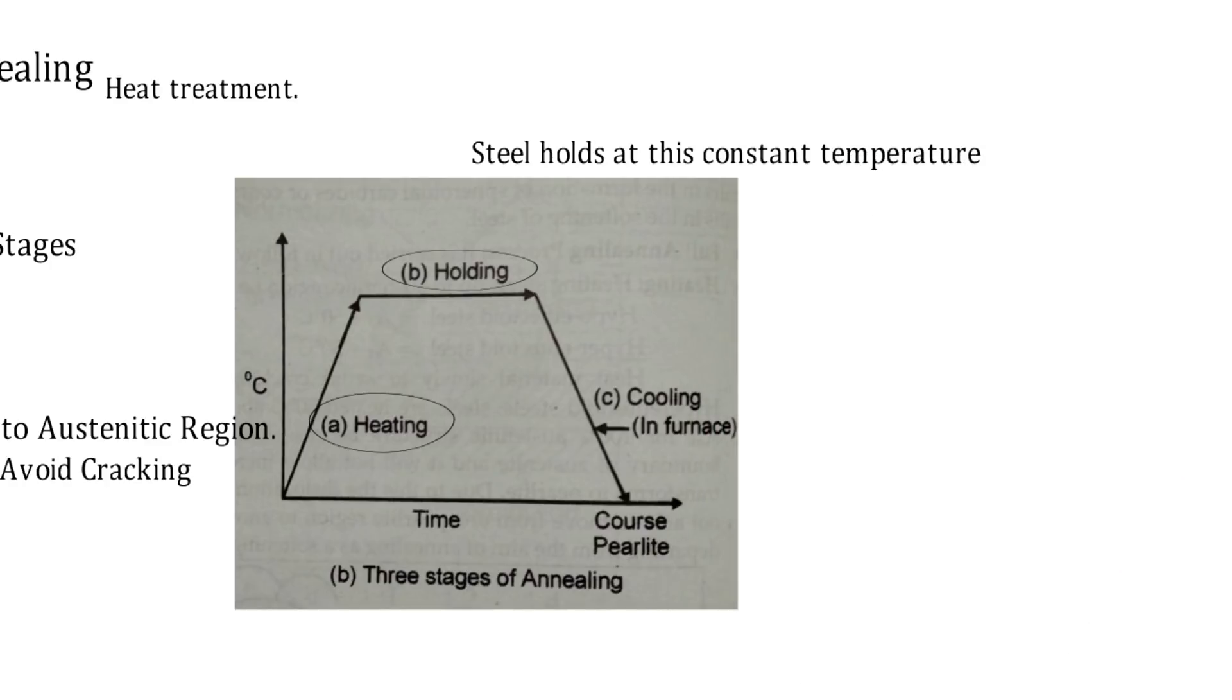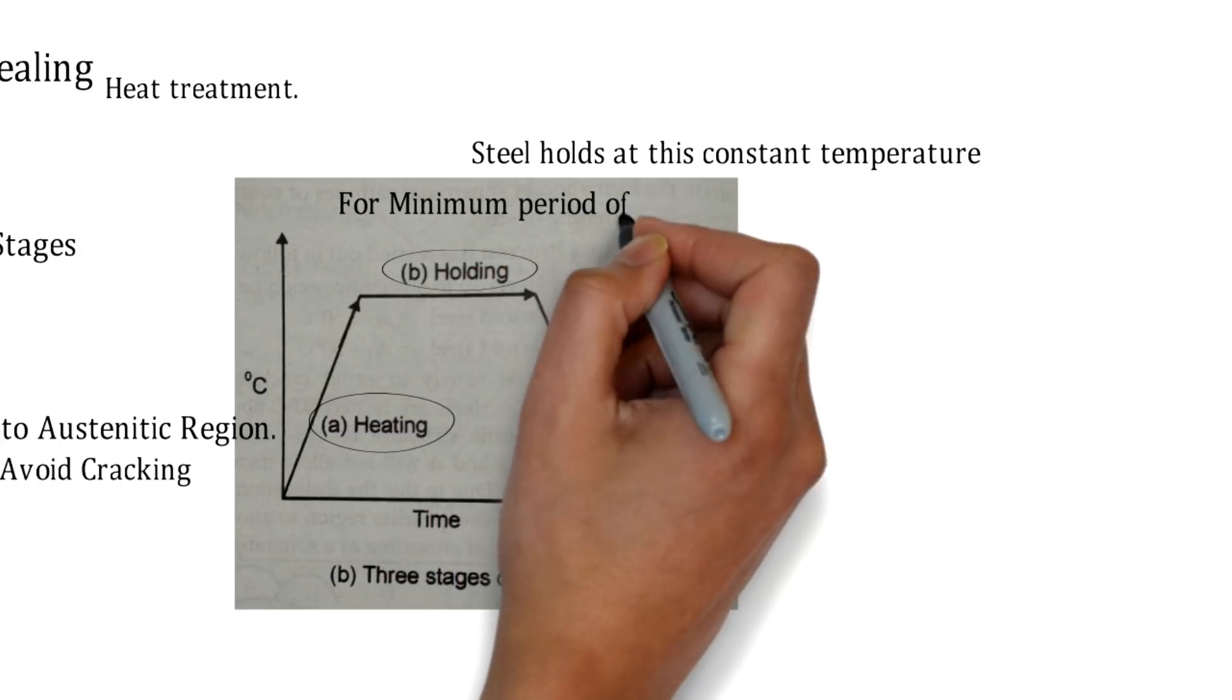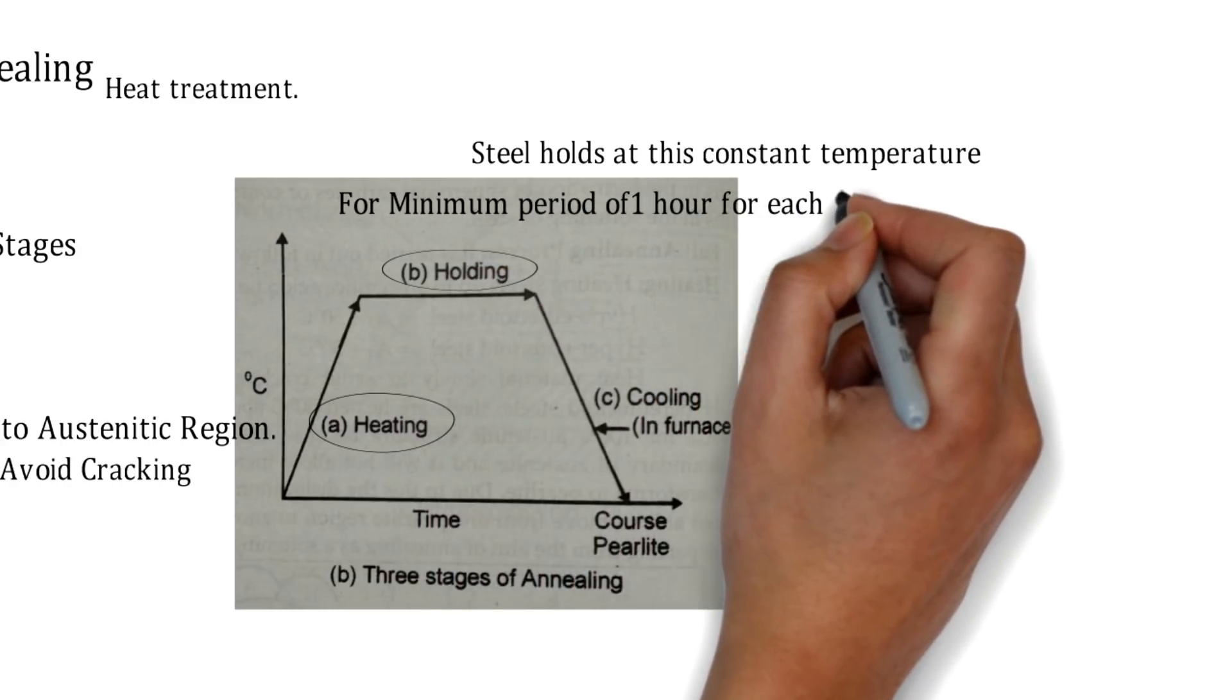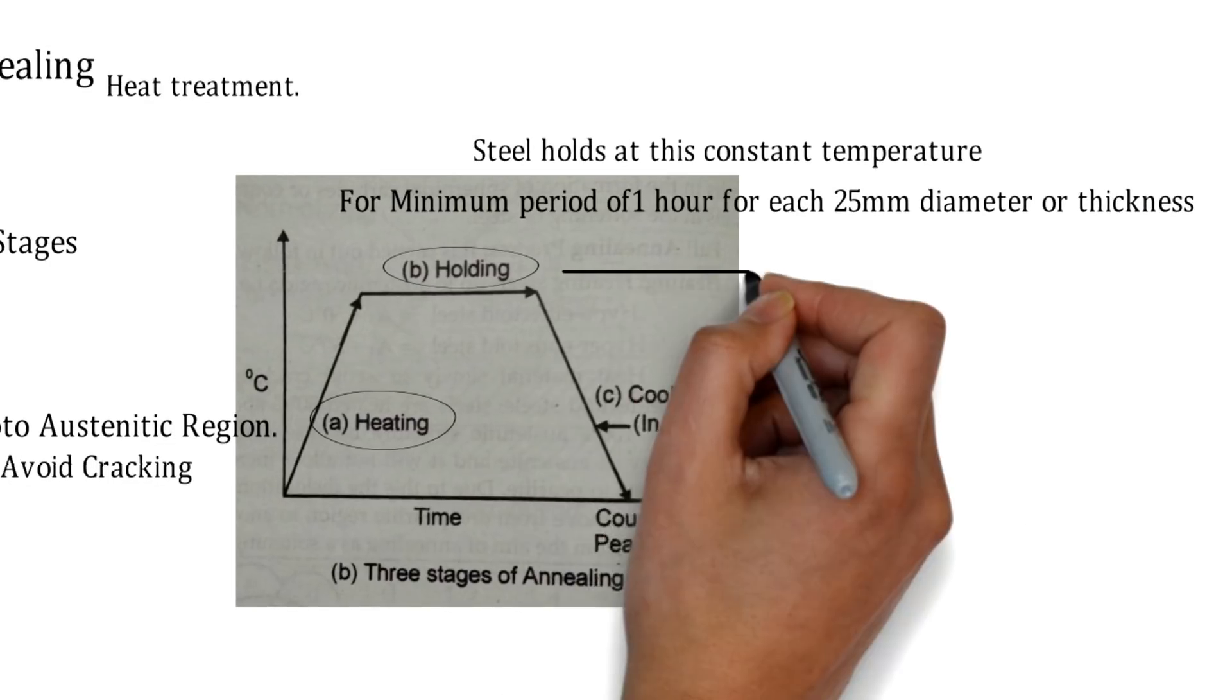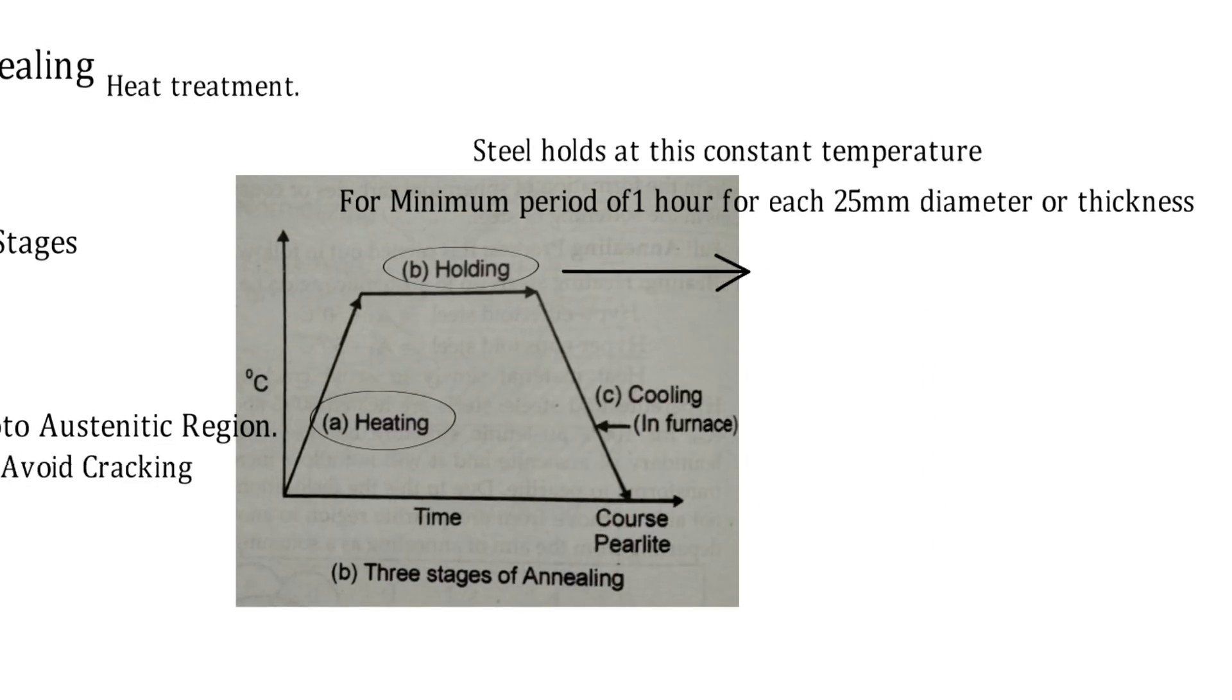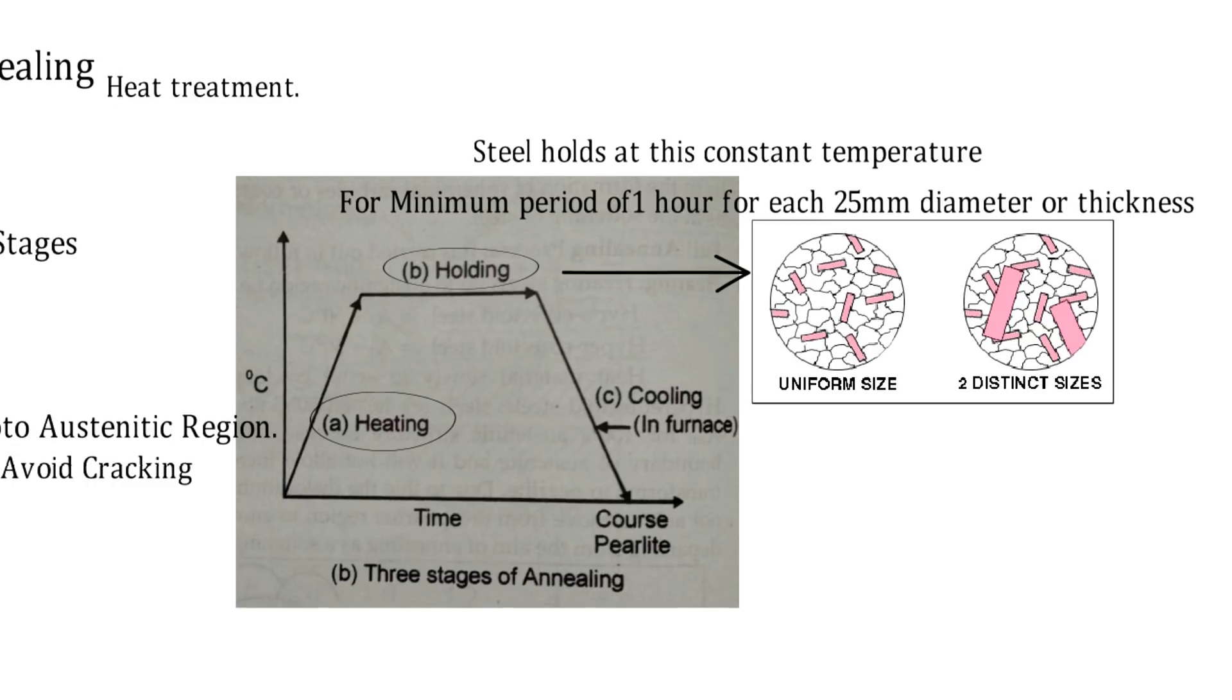For a specific period of time, this is for a minimum period of one hour for each 25mm of diameter for rod or thickness. This is the holding process in which we get uniform size grains in a particular steel.